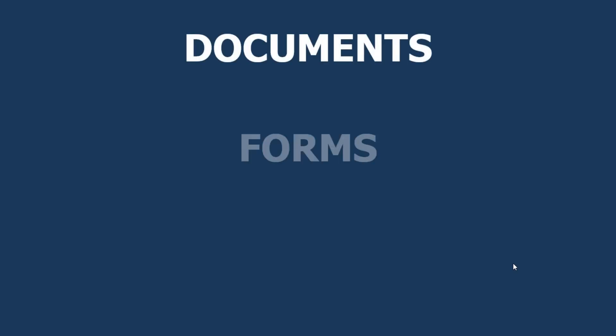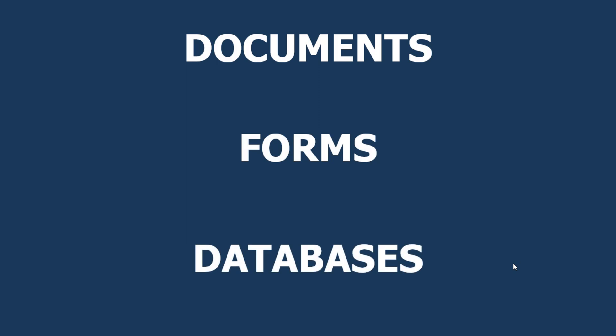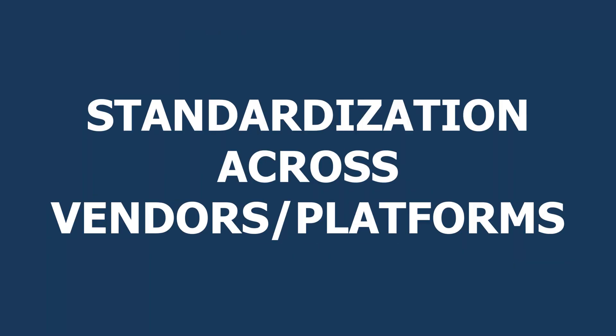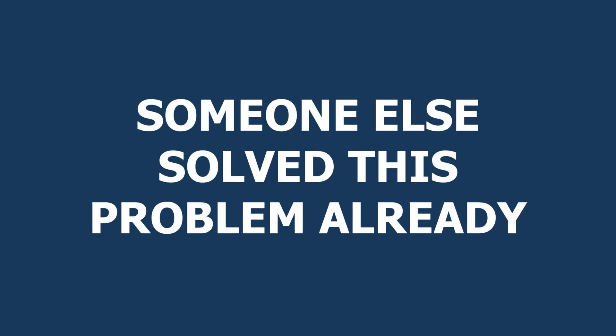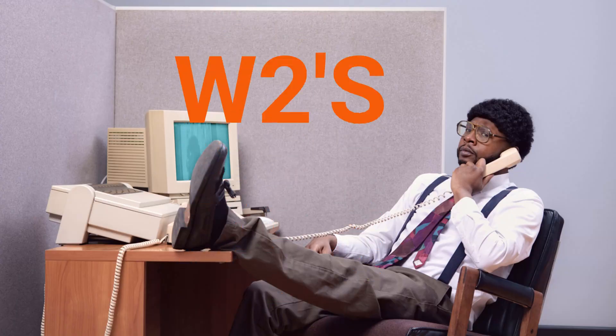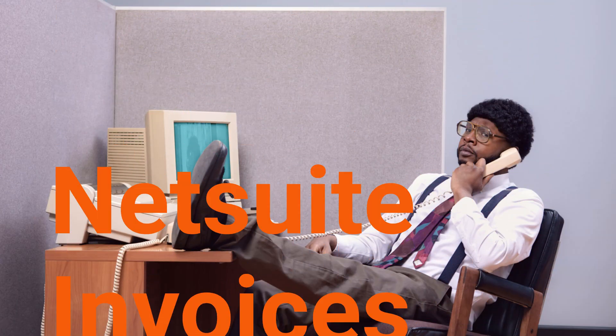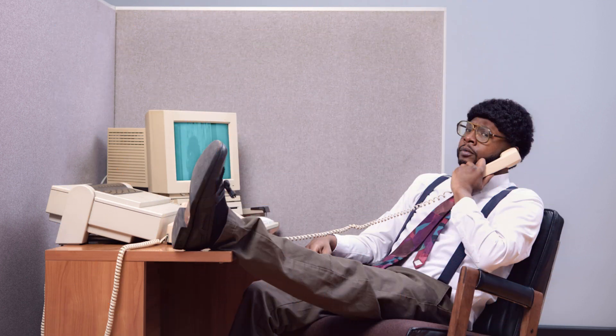Many of the documents, forms, or public databases that your company uses, many other people probably use too — because there's a lot of standardization of these types of forms, meaning someone has probably already solved the problem you're working on. Stuff like W-9s, W-2s, 1099s, QuickBooks invoices, Rushbooks invoices, NextRead invoices, government compliance databases, contracts, year-to-date forms from a variety of vendors, and other payroll forms.